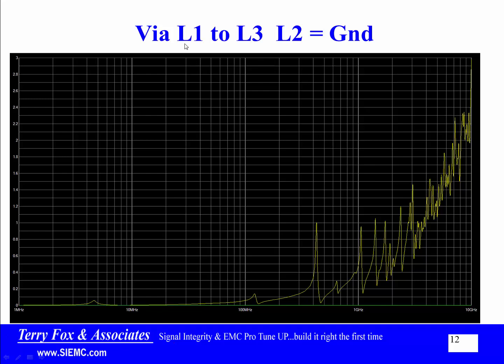The takeaway is that going either side of a single ground plane is a relatively safe and non-damaging way to route things, even though you do have a stub hanging down.